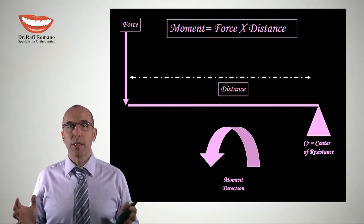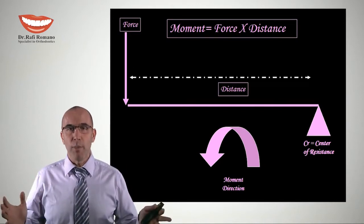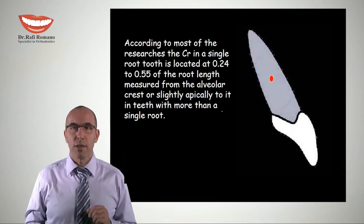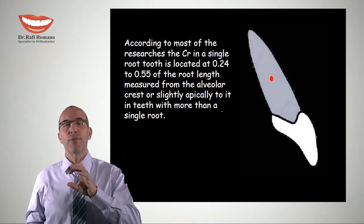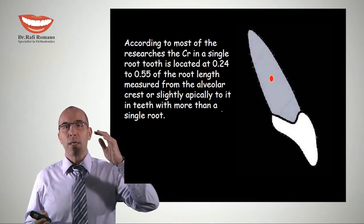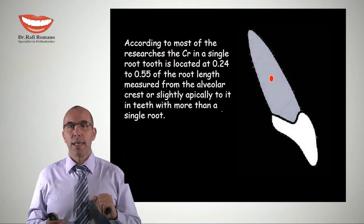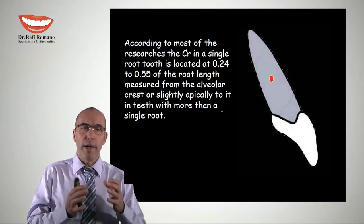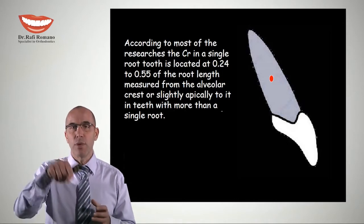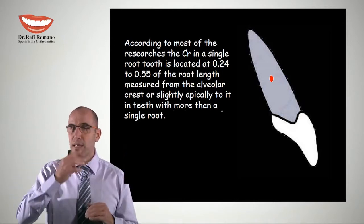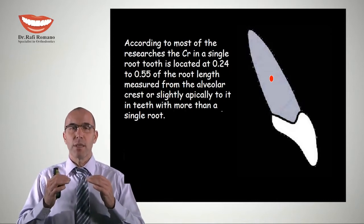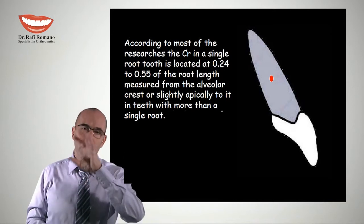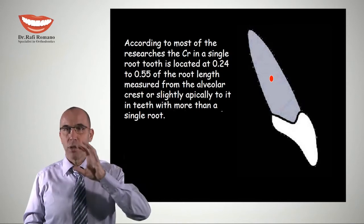The problem is that when we want to move teeth and need a large moment — for example, to rotate the tooth — we need distance. The center of resistance is usually located around 0.24 to 0.55 of the root length at the alveolar crest, slightly apical to it. This range exists because of different measurement methods. Factors like ligating a few teeth together shift the center of resistance more coronally; periodontal problems also move it up. It is a virtual point we have to visualize.